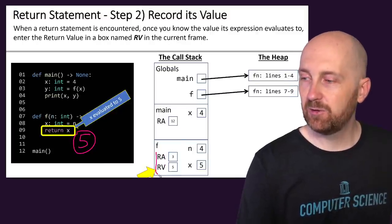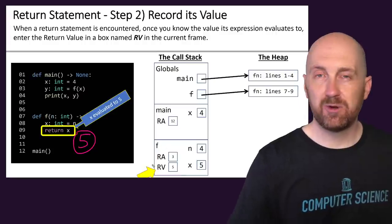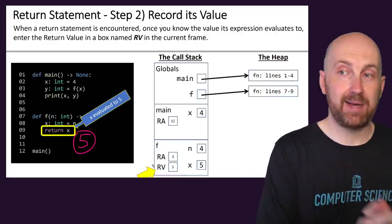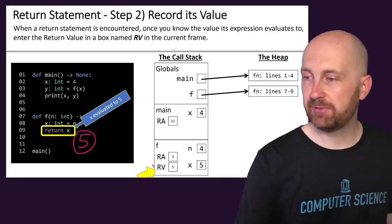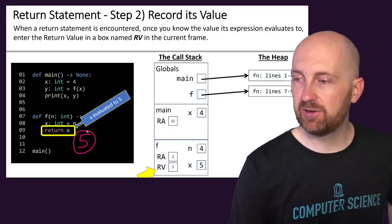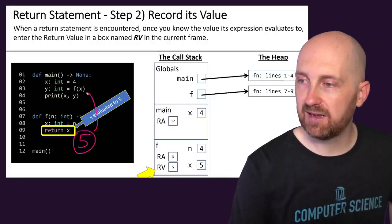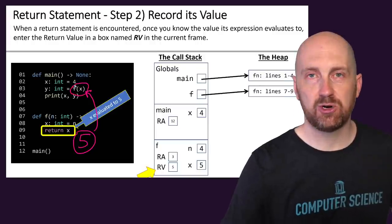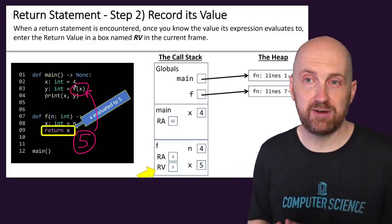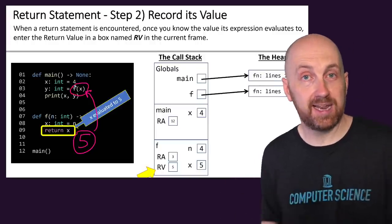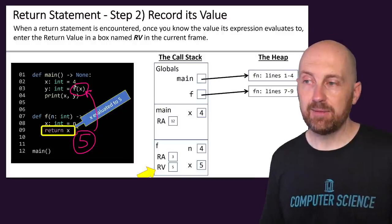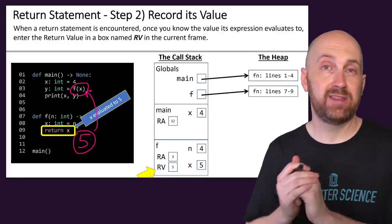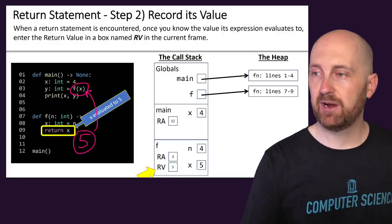With the return value of 5 and the return address of line 3, the next step is to send the value 5 back to line 3. This is where that function call originated from — this is how we got into that function call. By returning 5, we're saying: this function call now evaluates to 5.